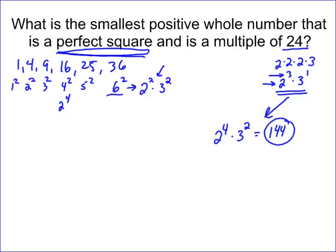Essentially, what you do is factor the multiple because that's what has to be inside your perfect square, and then add things to the exponent until you get even exponents.